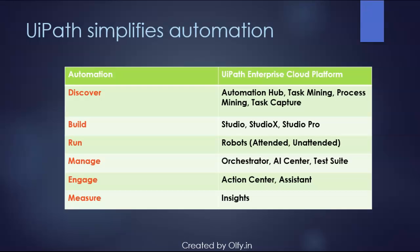When an automation includes decisions that a human should make — like approvals, escalations, and exceptions — UiPath Action Center makes it easy and efficient to hand off the process from robot to human. UiPath Insights is an RPA analytics solution that tracks, measures, and forecasts the performance of your entire automation program, taking your automation journey to the next level.